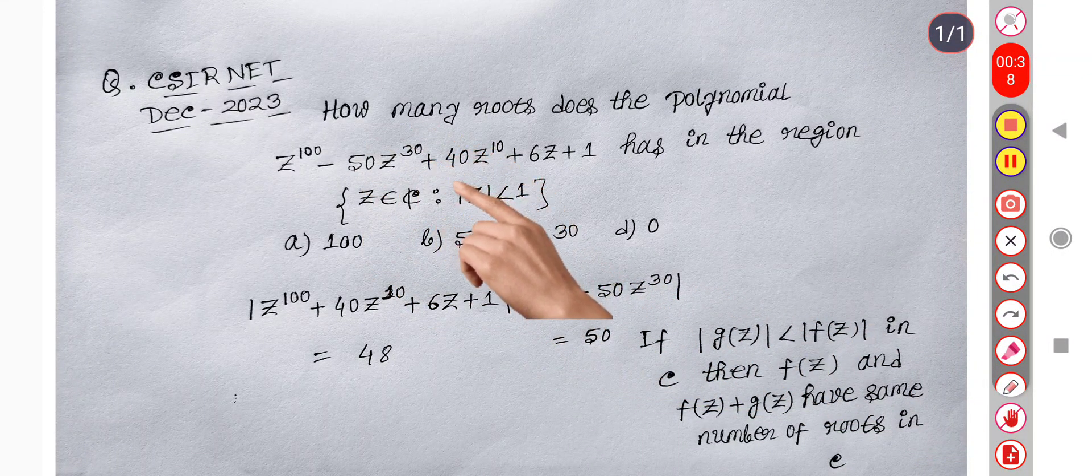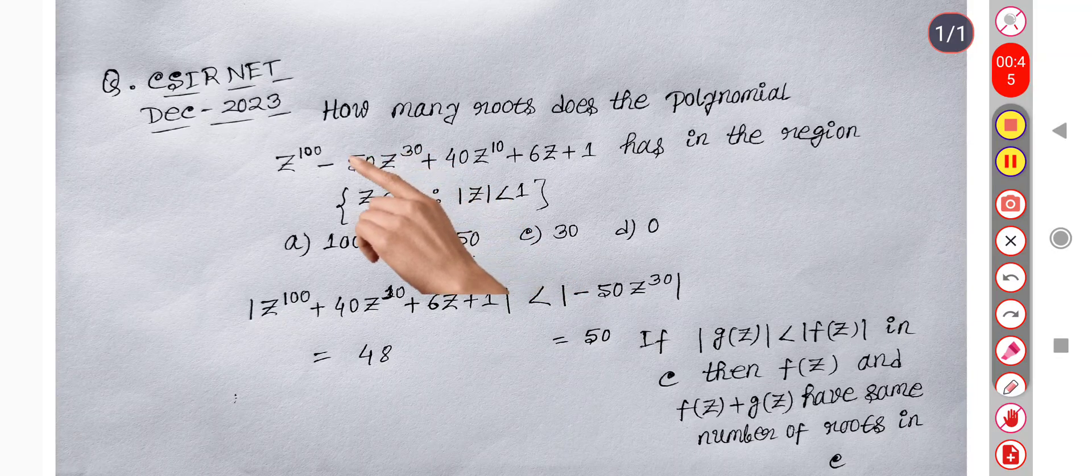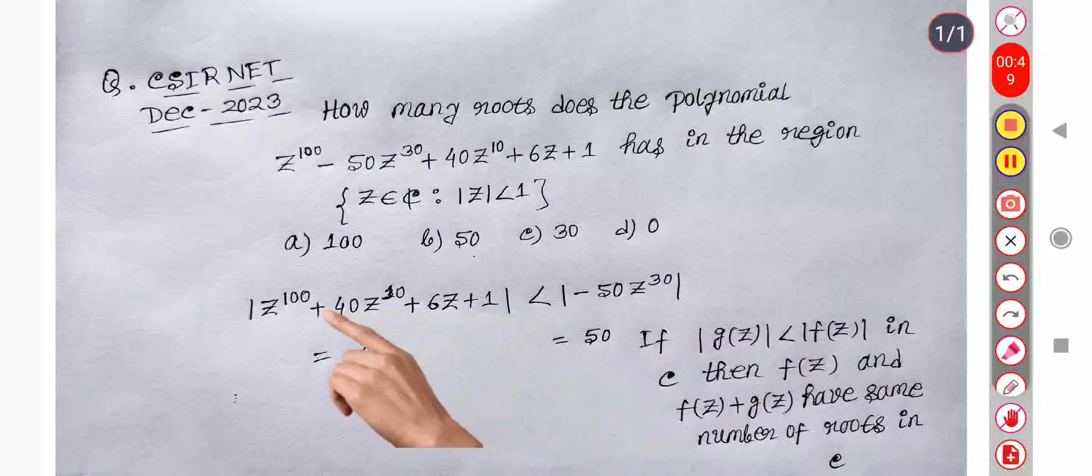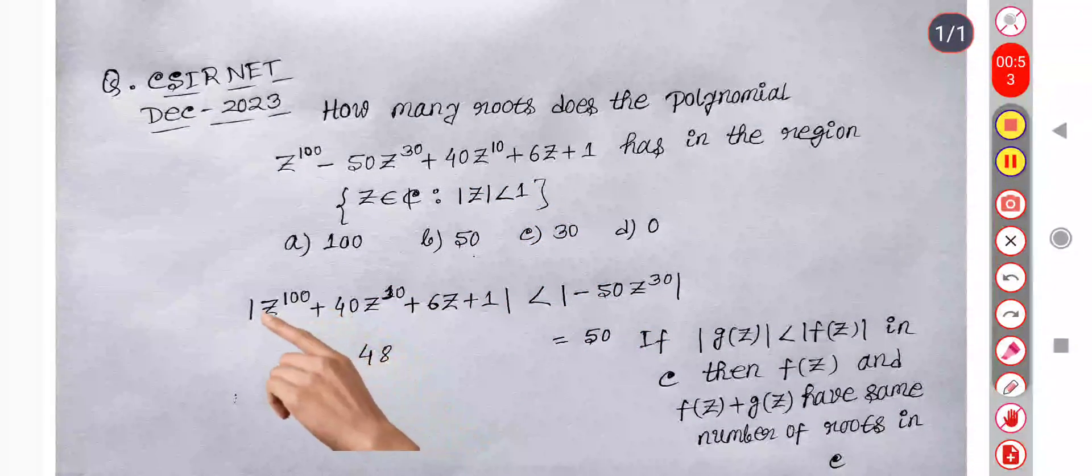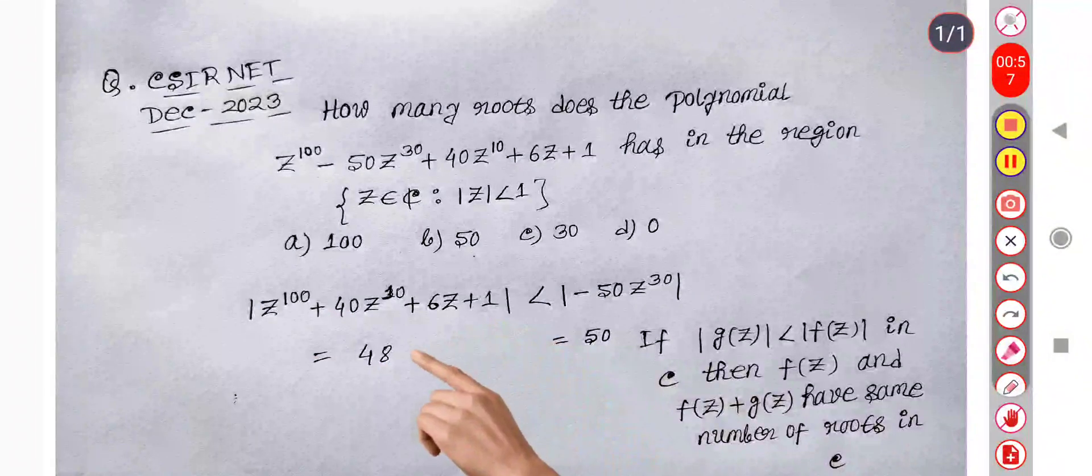For this case, we take g(z) as z power 100 plus 40 z power 10 plus 6z plus 1 and f(z) as minus 50 z power 30. If we check in region mod z less than 1, then we get 1 plus 40 plus 6 plus 1, so 48.